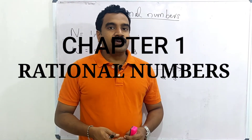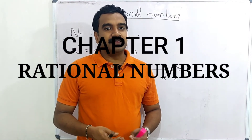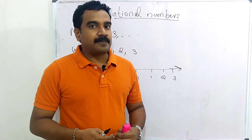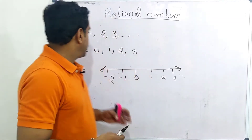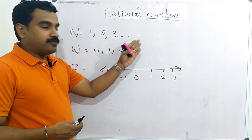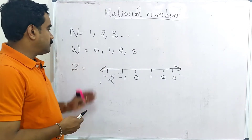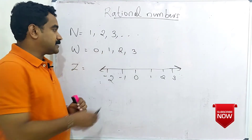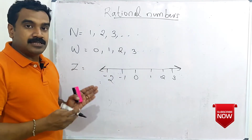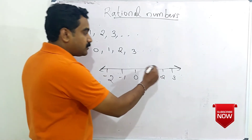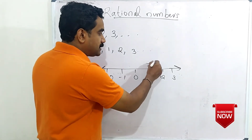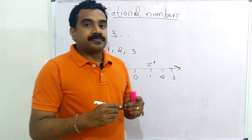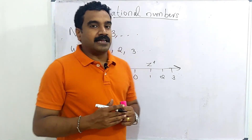Dear students, welcome. We are going to discuss the eighth standard first chapter: rational numbers. We know different types of the number system — natural numbers 1, 2, 3, 4, 5, 6, etc., whole numbers 0, 1, 2, 3, etc., and integers, which include positive integers and negative integers. This year we are going to discuss rational numbers.